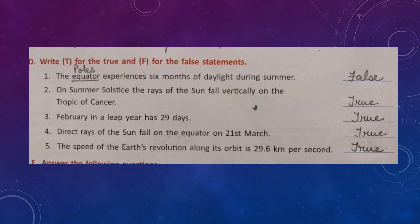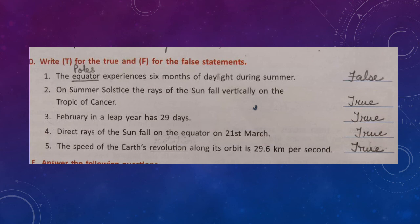True or false: Number 1 — the equator experiences six months of daylight during summer — this is false; it is the poles that experience six months of daylight. Number 2 — on summer solstice the rays of the sun fall vertically on the Tropic of Cancer — true, this happens on 21st June. Number 3 — February in a leap year has 29 days — true. Number 4 — direct rays of the sun fall on the equator on 21st March — true, this day is the spring or vernal equinox. Number 5 — the speed of the earth's revolution is 29.6 kilometers per second — true.